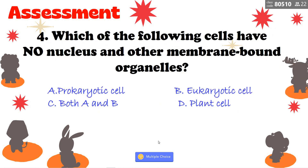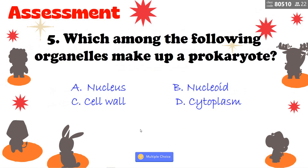Number four: which of the following cells have no nucleus and other membrane-bound organelles? That is prokaryotic cell. Number five: which among the following organelles makes up prokaryotes? It is the nucleoid.